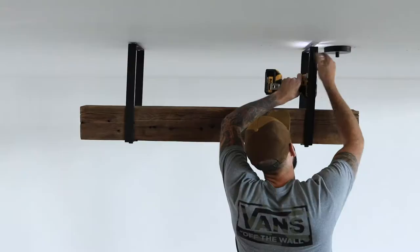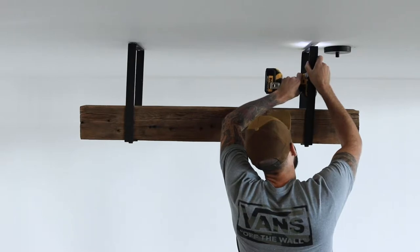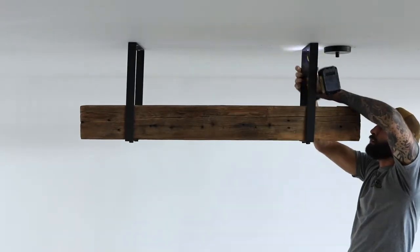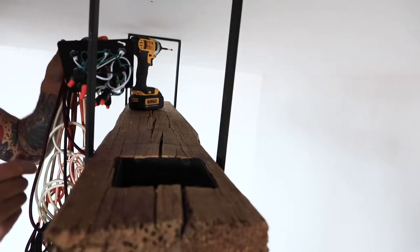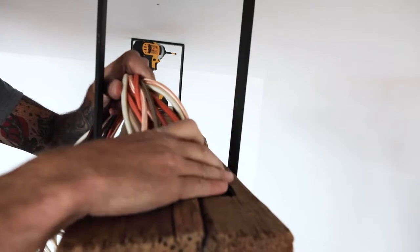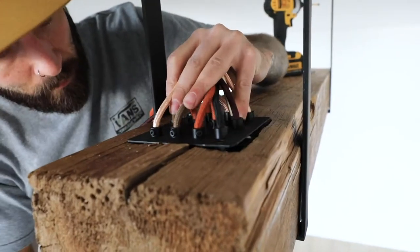Once you feel that they've butterflied out, tighten the anchors up with a power drill. The brackets and beams should be very secure, flush with the ceiling, and not shift around on the ceiling. Next take the pendants and J-Box plate and mount it to the body of the junction box using the provided screws.